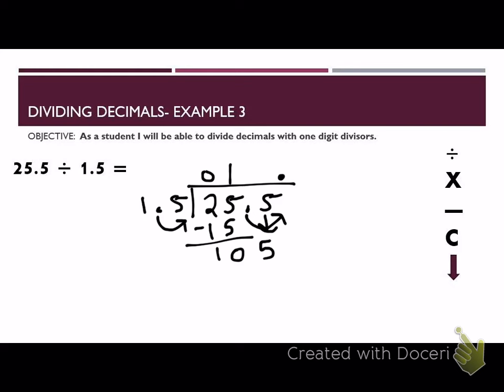We need to go ahead and add our 5, and we have 105 divided by 15. How many times does 15 go into 105? Well, that would actually be 7. 7 times 15 is 105. 105 minus 105 is 0. There is nothing left over. Our answer is simply 17. We have one more example to go.